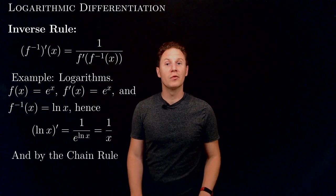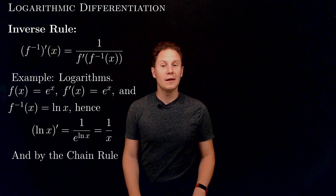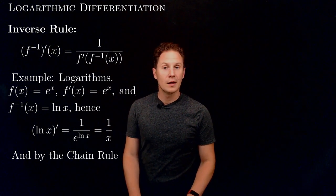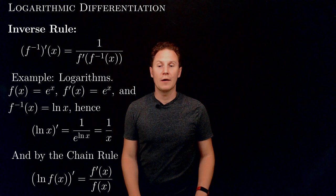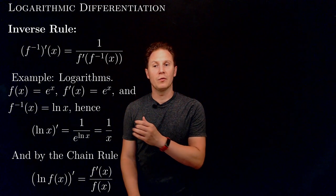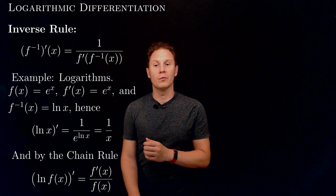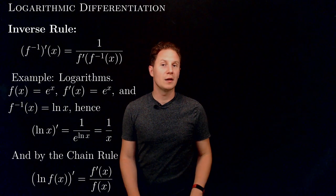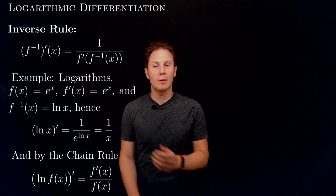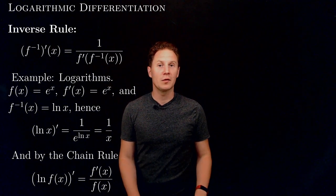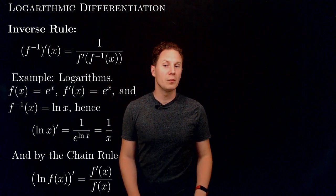Now we can extend this result further by combining it with the chain rule to get that the derivative of the natural logarithm of f of x is the derivative of the outer function, which is 1 over the function, multiplied by the derivative of the inner function, that is f prime of x. So the derivative of the natural logarithm of f is simply f prime of x divided by f.